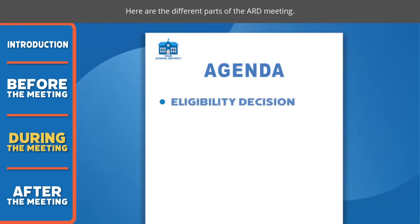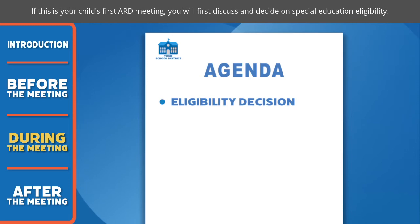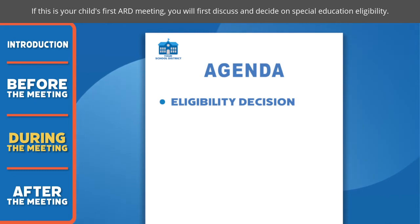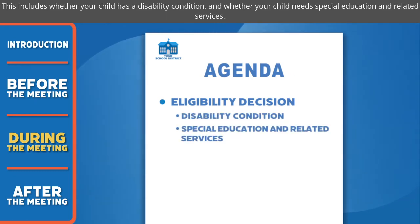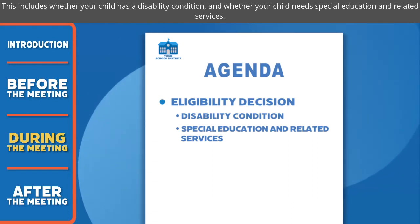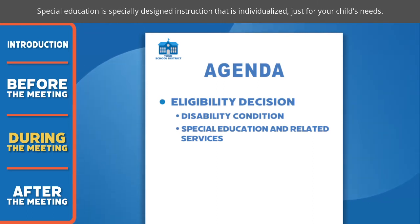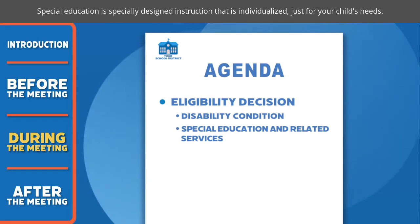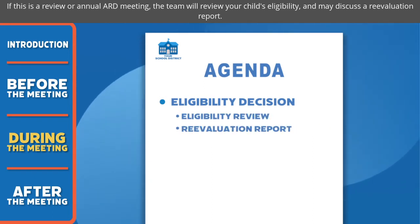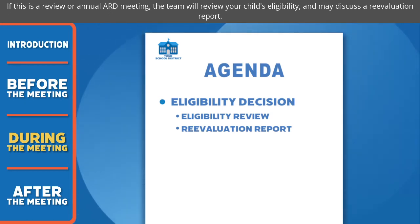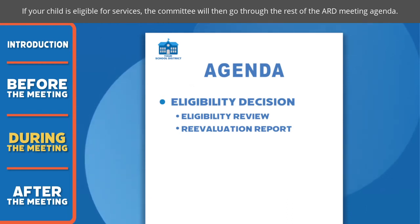Here are the different parts of the ARD meeting. If this is your child's first ARD meeting, you will first discuss and decide on special education eligibility. This includes whether your child has a disability condition and whether your child needs special education and related services. Special education is specially designed instruction that is individualized just for your child's needs. If this is a review or annual ARD meeting, the team will review your child's eligibility and may discuss a re-evaluation report. If your child is eligible for services, the committee will then go through the rest of the ARD meeting agenda.